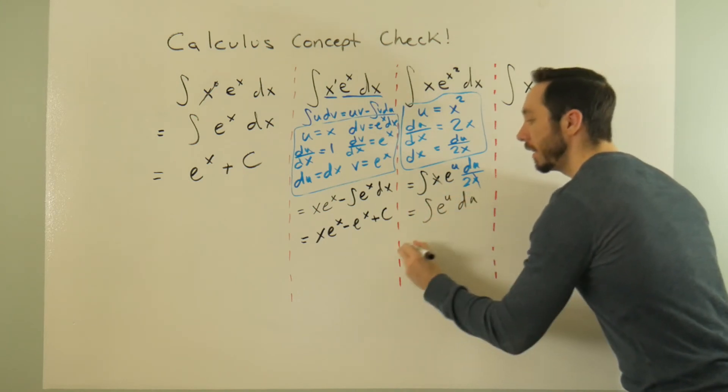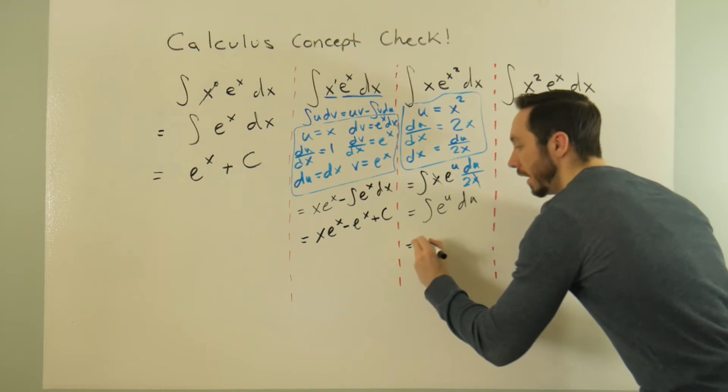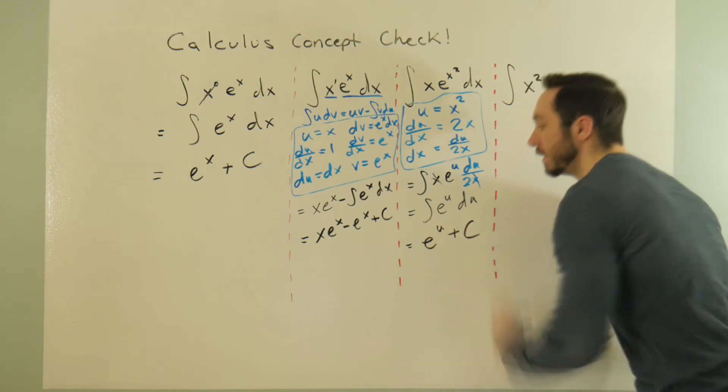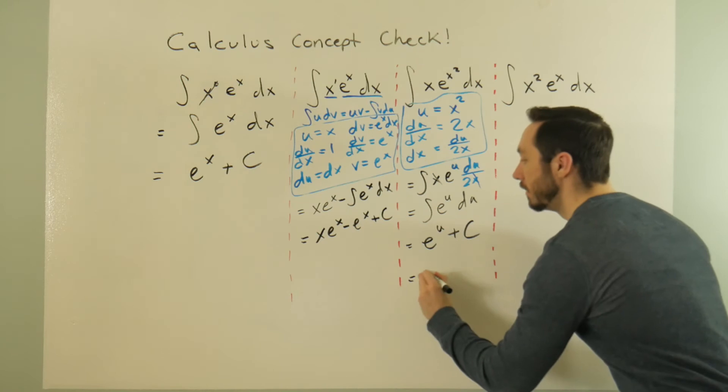Now we're getting somewhere because what is this going to allow us to see? These x's cancel, cancel, cancel, and I'm left with the integral of e^u du. Hey, I know that! That would be e^u plus C.